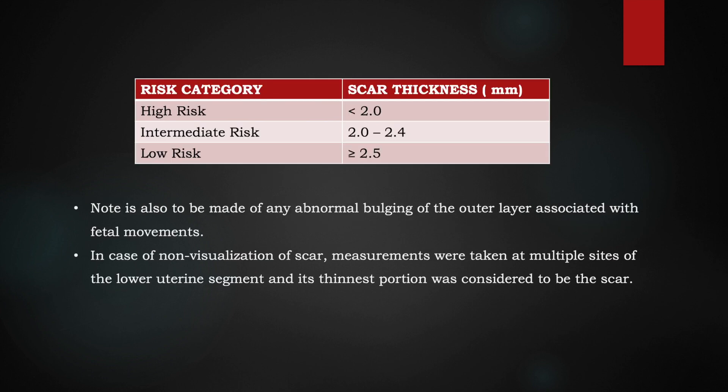According to some studies, risk categories are defined by scar thickness. High risk is considered when it is less than 2 mm, intermediate risk when it is between 2 to 2.4 mm, and low risk when it is more than 2.5 mm.